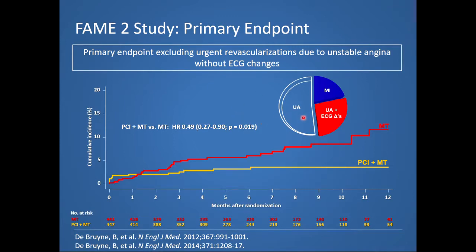This trial was stopped early by the Data and Safety Monitoring Board because the results were very profound. The disadvantage of stopping early was that we initially did not have long-term outcome data comparing PCI plus medical therapy versus medical therapy alone. However, the ISCHEMIA trial now indicates there is no difference between medical therapy versus PCI plus medical therapy — though a limitation of that trial is that FFR, IFR, or non-hyperemic pressure ratios were not assessed routinely. One must consider the whole body of evidence when addressing this important question.